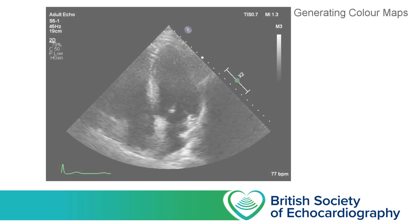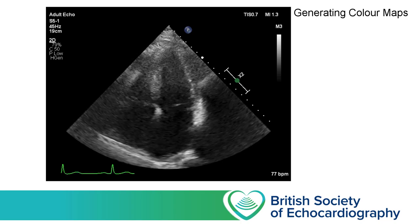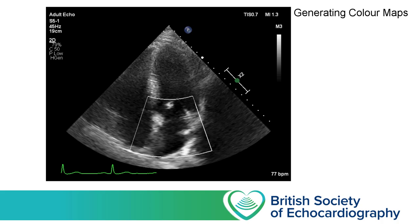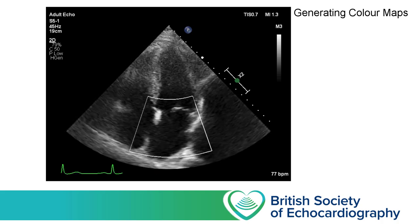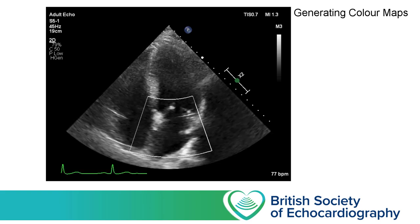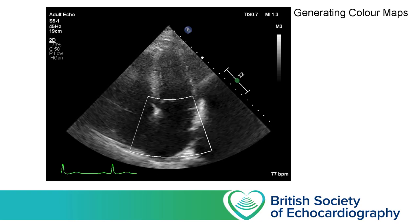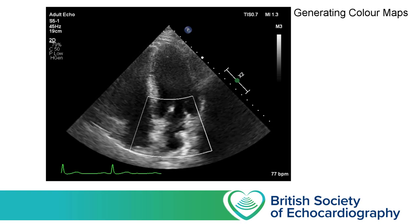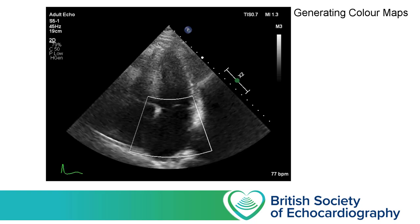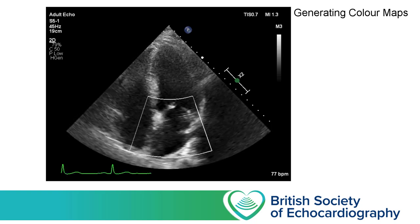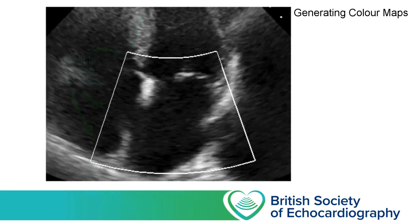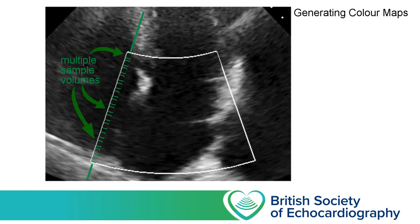So how can we use pulsed wave Doppler to generate a colour map? Let's go back to our apical four chamber view, and we're going to lay a box over the image which demarcates the area we're interested in, and ask our ultrasound machine to overlay — on top of our 2D grayscale image — information about flow velocity and direction. This 2D image has a depth of 19 centimetres and is being recorded at 45 frames per second, and there are about 90 scan lines making up this 2D image. When we start to generate a colour map, the ultrasound machine acquires additional information from those scan lines that pass through our colour box.